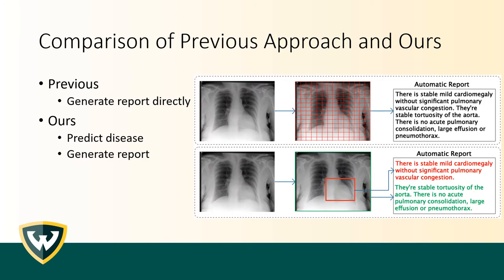Currently, several approaches have been developed to generate reports automatically for chest X-rays. As shown in the upper panel, they usually use a coarse grid of image regions as visual features to generate reports directly, which cannot demonstrate satisfactory performance in disease localization and classification — which we think is a central issue in medical image interpretation. To address these issues, as shown in the lower panel, our approach first predicts and localizes disease as semantic features, then followed by report generation. In this way, our system is capable of accurately annotating X-ray images and generating quality reports, which also provides visual support to assist radiologists in making a diagnosis.